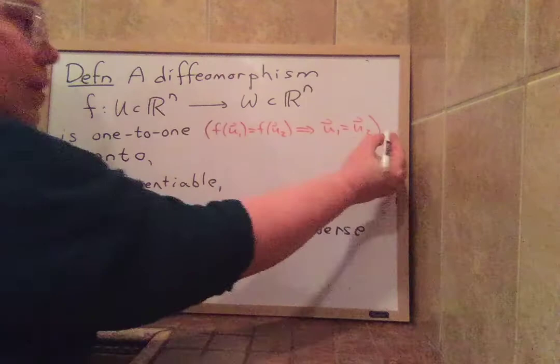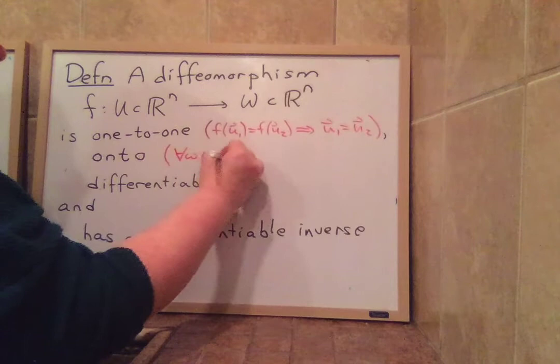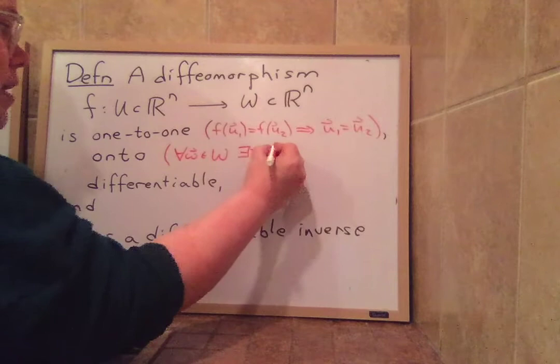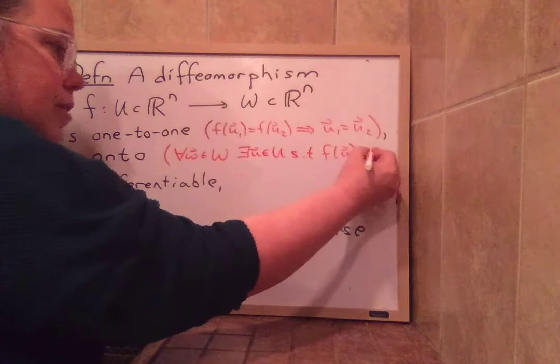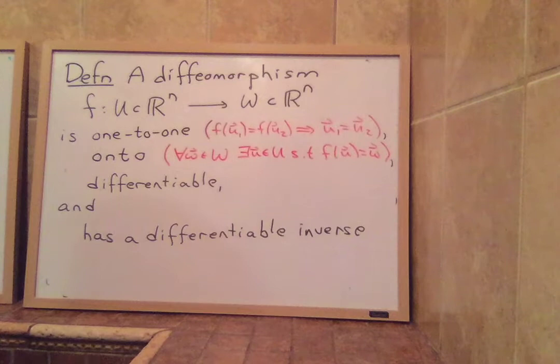Onto means that, and this is the same one-to-one that you learned in linear algebra, onto means that every single w that's in the output set, there exists a u in the input set such that f of u is w. That's the exact same onto that was taught in linear algebra. That's saying you can reach every single point here from some point over here in u.